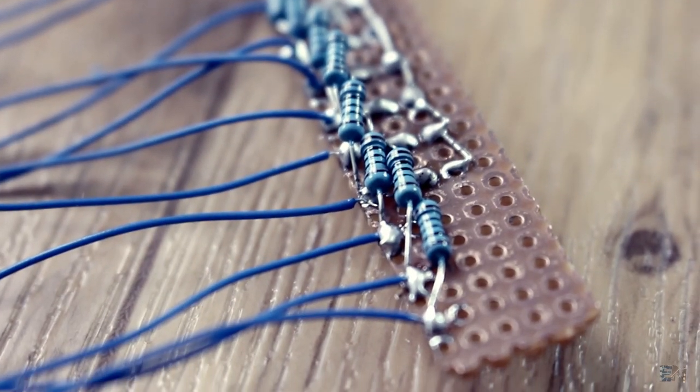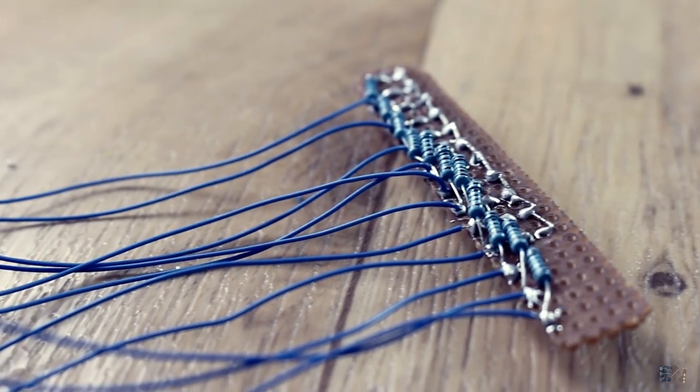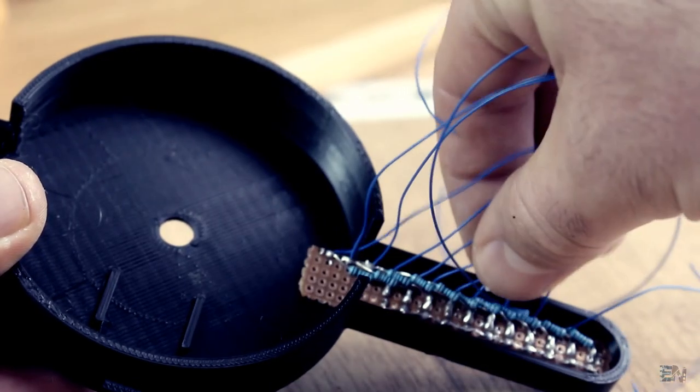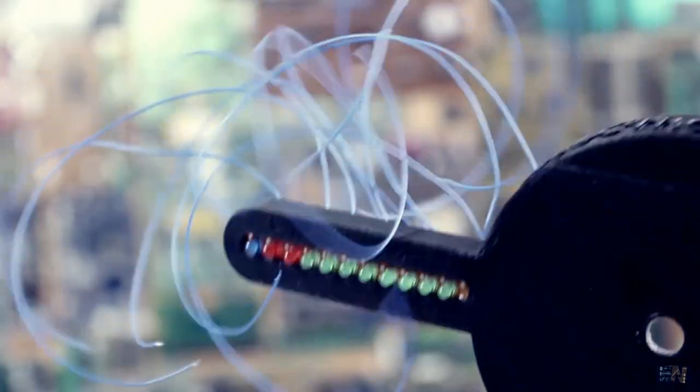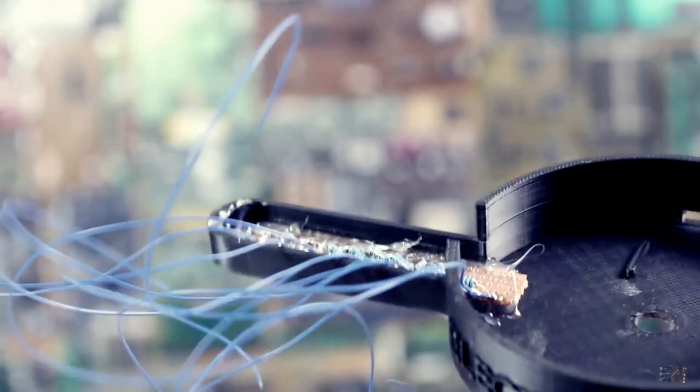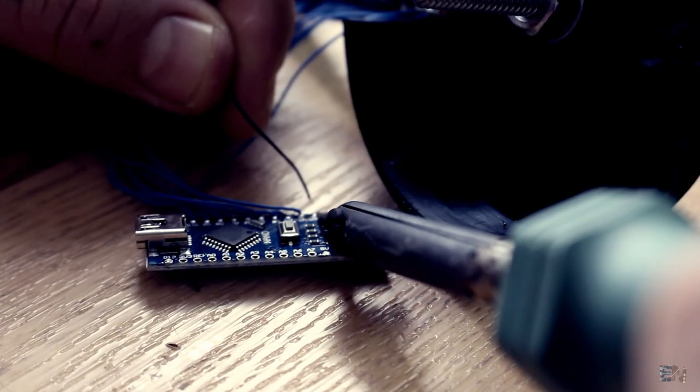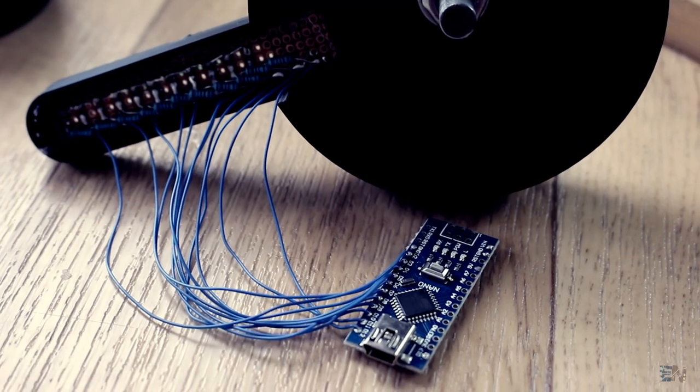Once that is done, I solder a long enough wire that will later be soldered to the Arduino pins. I glue in place the PCB on the 3D printed case, so the LEDs are facing the hole in the case, so we will see the light on the other side. Now I solder each LED wire from digital pin D2 to D12, as in the schematic. I also connect the ground wire.